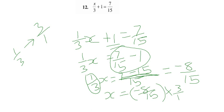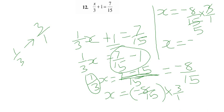To simplify this, I can write -8, and we have 15 and 3. So 15 divided by 3 becomes 5. If you simplify, x equals -8/5.